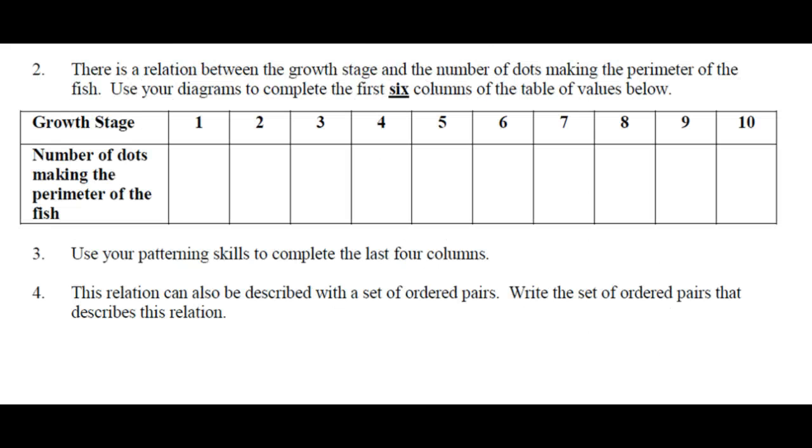There's a relation between the growth stage and the number of dots making the perimeter of the fish. Use your diagrams to complete the first 6 columns of the table of values below. You can see this because it's in front of you, so I'm going to rely on you for some answers.